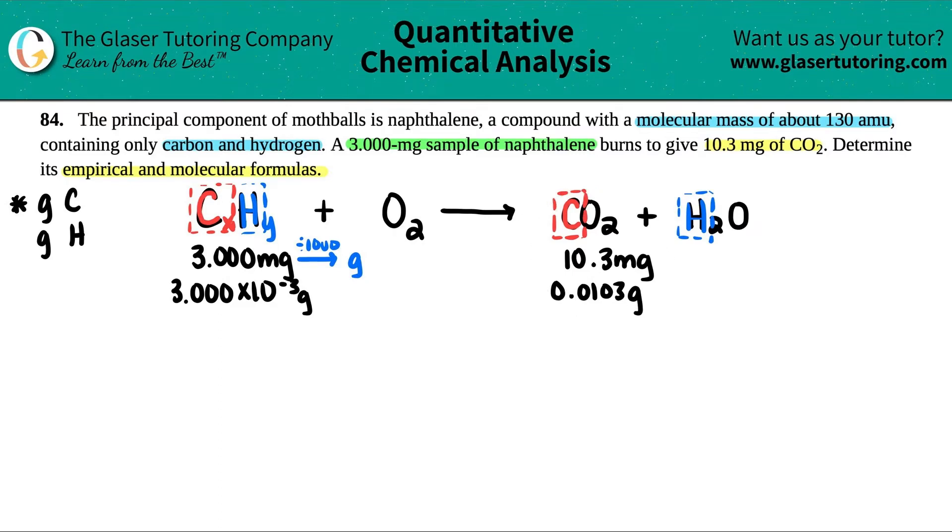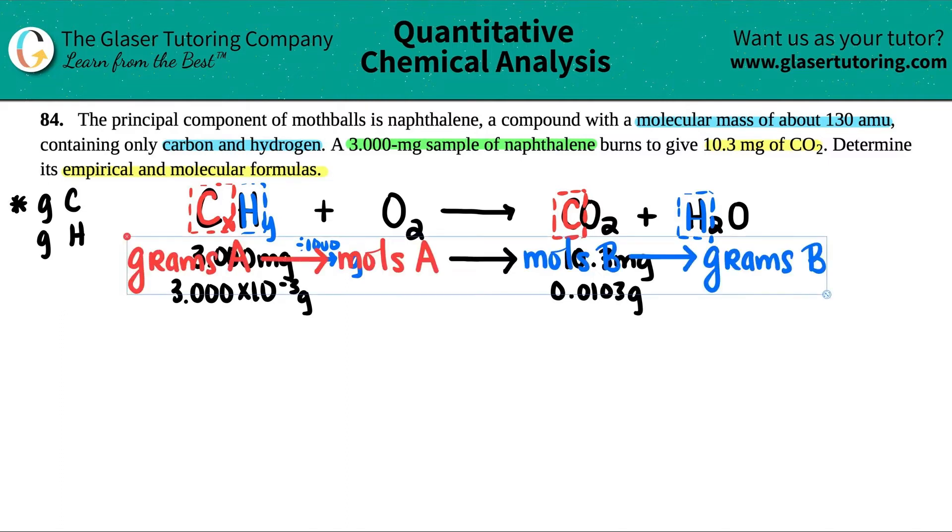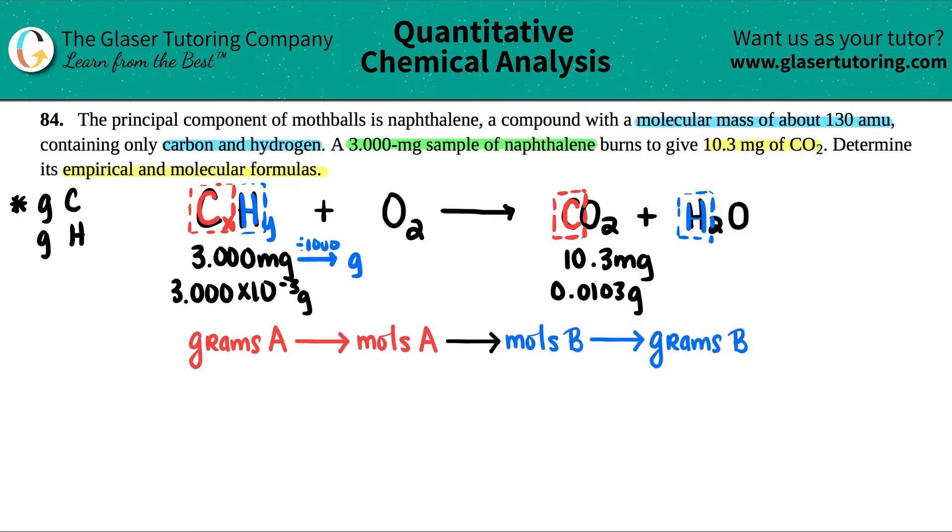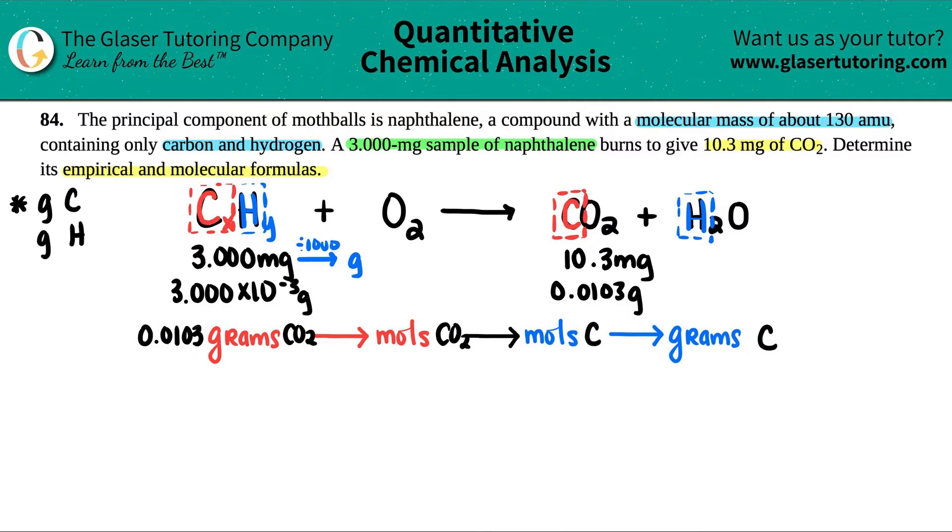So from the carbon dioxide, I'm going to specifically find out how much carbon I have by doing my dimensional analysis, my stoichiometry that we've been doing over and over again. The flow for stoichiometry is always this. We're just going to cater it to what we have. We're starting off with the CO2 and we specifically have 0.0103 grams of that. I can go to moles of CO2. And from there, I have to find out the moles of the actual carbon, and then I can find out how many grams of carbon I have.